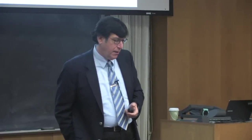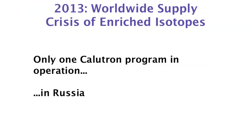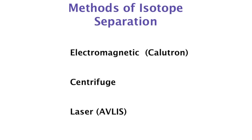A modern calutron — modern meaning circa 1950 — is essentially an electromagnetic separator. You make a stream of neutral atoms, ionize them by bombarding with electrons, then separate them in a curved path by their charge-to-mass ratio, like a big spectrometer. We now find ourselves in 2013 in an unusual situation: a particular technology has become obsolete before there is a replacement. There is only one calutron program still in operation, in Russia, heavily subsidized, and it could turn off any day.